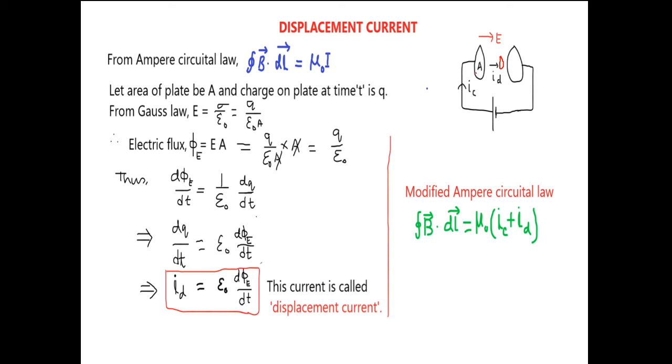Let the area of plate be A and at any time charge on the plate is Q. So from the Gauss law, that instantaneous electric field will be sigma by epsilon naught, where sigma is surface charge density. And that is Q by A. So electric field between the plate, that is Q by epsilon naught A.